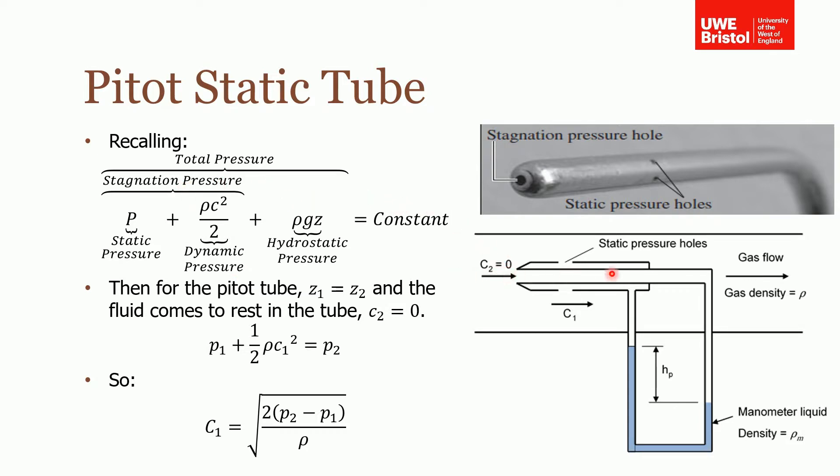If we apply this to our pitot static tube here, we can see that this is horizontal. So for this pitot tube, z1 equals z2, so that would cancel from each side. But notice here that for the fluid that's flowing into the center tube, eventually this fluid is going to come to rest because it has velocity out here, it's going to come into this tube, but as it comes in here it's going to stop because it's got nowhere to go. So therefore c2 is zero.